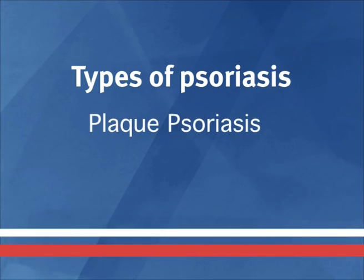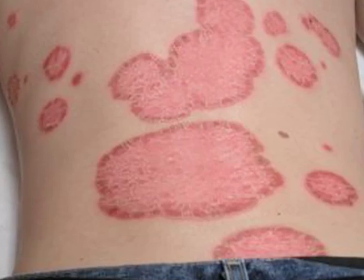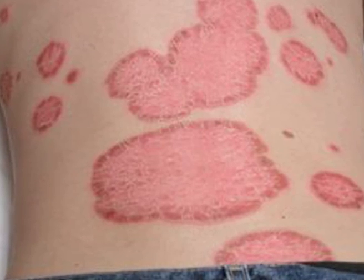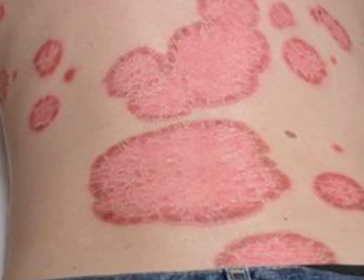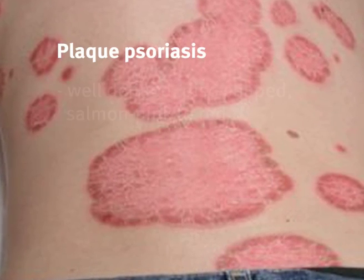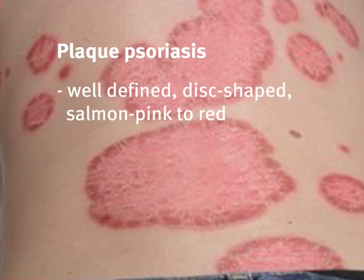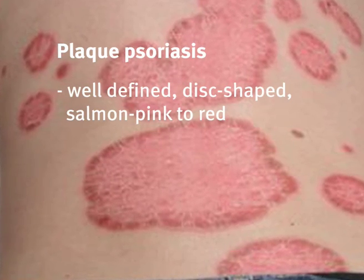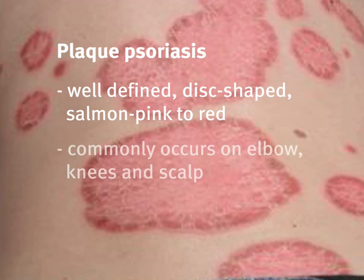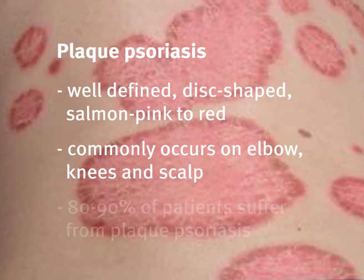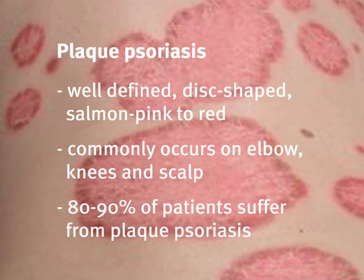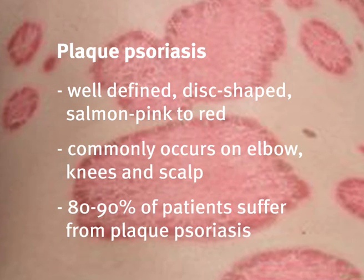Plaque psoriasis. This type of psoriasis is characterized by well-defined disc-shaped salmon pink to red plaques covered by silvery white scales, and most commonly occurs on elbows, knees and scalp. Eighty to ninety percent of all psoriasis patients suffer from plaque psoriasis.